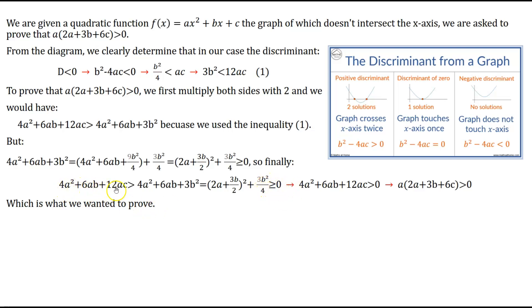So this left-hand term being greater than this term over here, of course, it will be greater than zero also. So we will have that 4a² + 6ab + 12ac > 0. Divide both sides by two and factorize a, and we have that a(2a + 3b + 6c) > 0, which is what we wanted to prove for this problem.